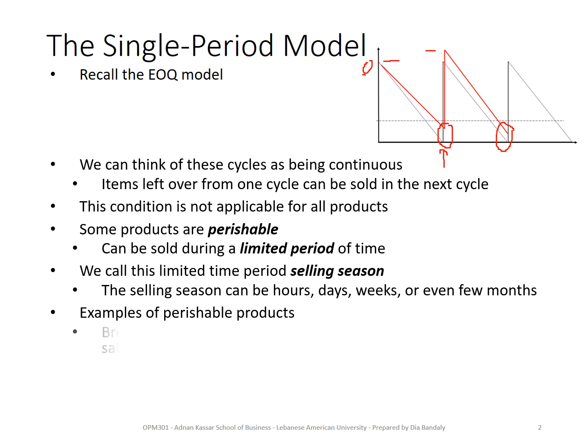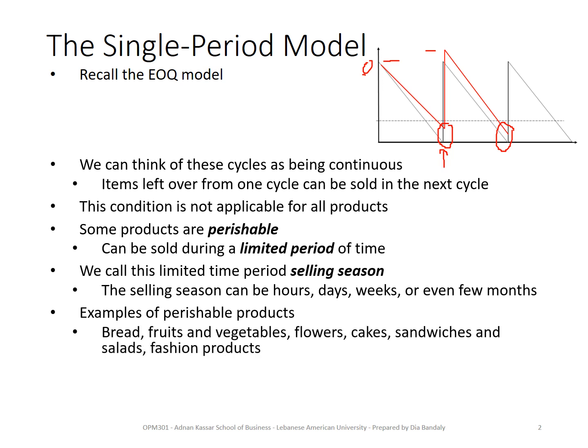Examples of perishable products include bread, fruits and vegetables, flowers, cakes, ready-made sandwiches sold in cafeterias or supermarkets that are already prepared and kept in the fridge waiting for customers, and ready salads sold in supermarkets for people who want a light lunch.